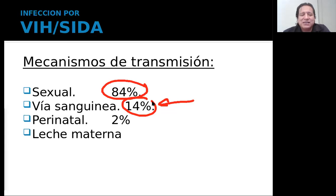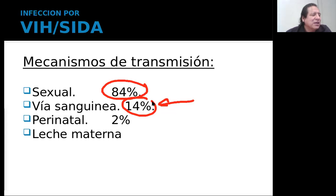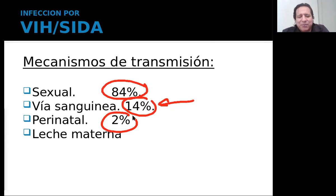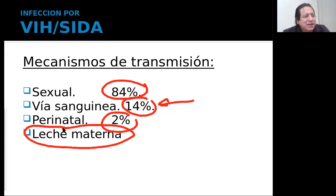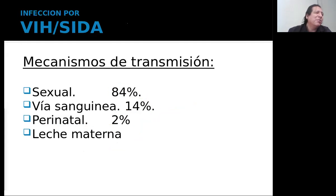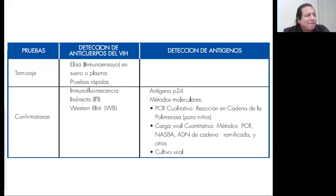La vía sanguínea es el 12% todavía, y está reduciéndose, ya que actualmente se manejan programas de sangre segura en lo que es transfusión. Antiguamente ese valor era más alto, y actualmente en Bolivia podemos decir que esta forma de transmisión es cero, porque hace ya bastante años manejamos un programa de sangre segura para evitar sangre contaminada con VIH. La otra es la perinatal, un 2%, cuando la madre está embarazada y pudiera contagiar al niño, ya sea por vía transplacentaria o en el momento del nacimiento.